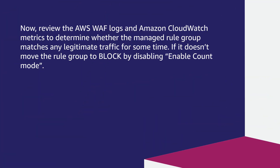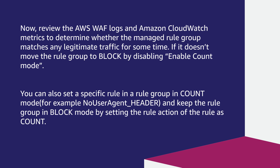Now review the AWS WAF logs and Amazon CloudWatch metrics to determine whether the managed rule group matches any legitimate traffic for some time. If it doesn't, move the rule group to block by disabling the Enable Count mode. You can also set a specific rule in a rule group to count mode — for example, No User Agent Header — and keep the rule group in block mode by setting that rule's action to count.